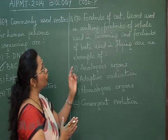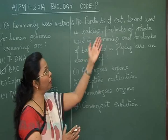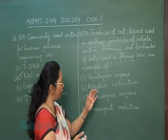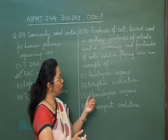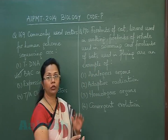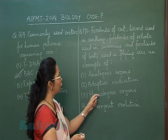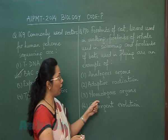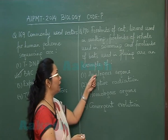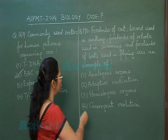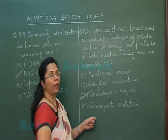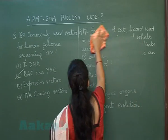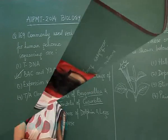Adaptive radiation applies to species filling different geographical habitats. Since lizard is a reptile and mammals are also mentioned, they cannot all be categorized under adaptive radiation. The correct answer is homologous organs, because all these forelimbs arise from a common origin, demonstrating common ancestry. Convergent evolution is also not the answer, as analogy leads to convergent evolution. So the answer is homologous organs.